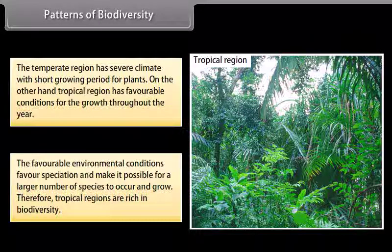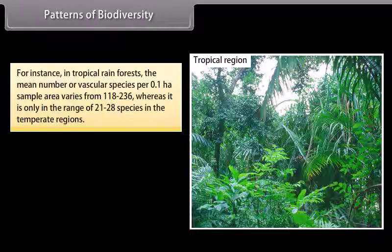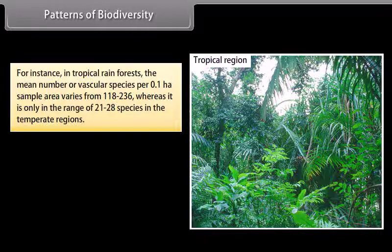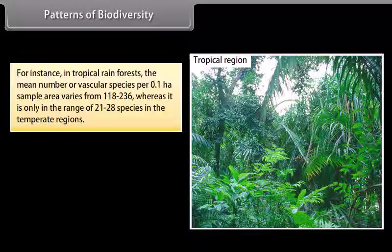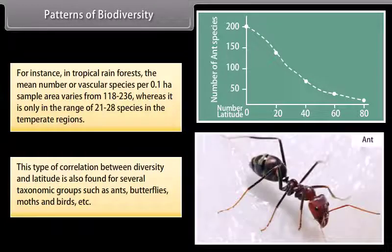Therefore, tropical regions are rich in biodiversity. For instance, in tropical rainforests, the mean number of vascular species per 0.1 HA sample area varies from 118 to 236, whereas it is only in the range of 21 to 28 species in temperate regions. This correlation between diversity and latitude is also found for several taxonomic groups such as ants, butterflies, moths, and birds.